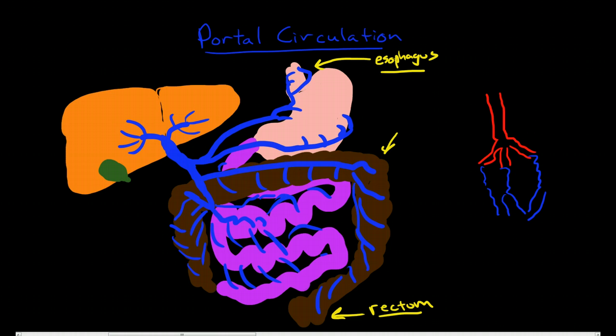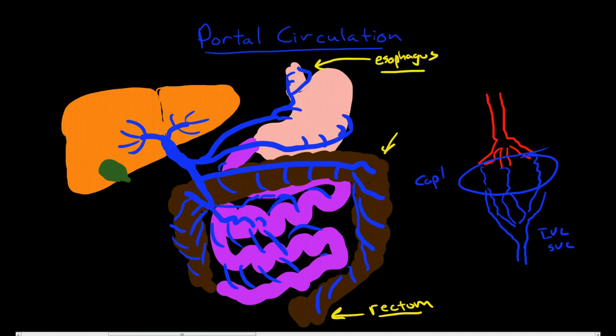And these venules make their way to one of the major veins like the IVC or the SVC and go back to the heart. So we have artery, capillary bed, and then vein. That's the usual state of affairs.